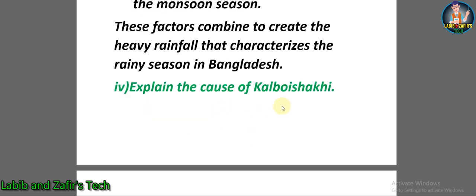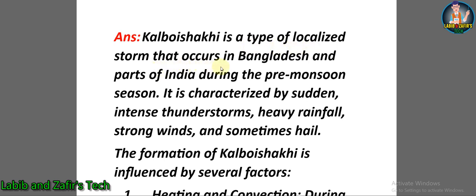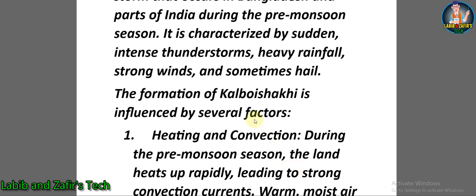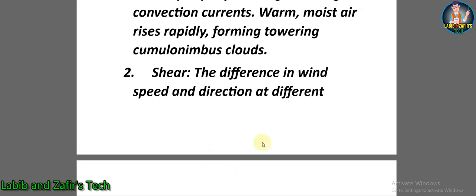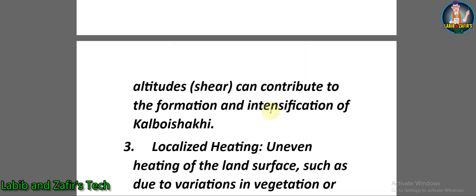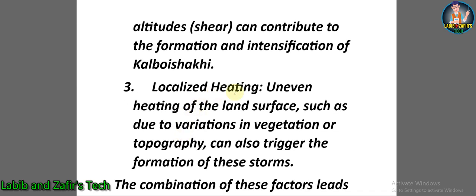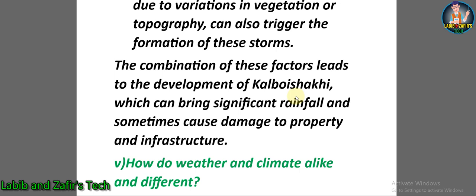Descriptive question number four: Explain the cause of Kalboishakhi. Answer: Kalboishakhi is a type of localized storm in Bangladesh and parts of India during the pre-monsoon season, characterized by sudden intense thunderstorms, heavy rainfall, strong winds, and sometimes hail. Its formation is influenced by: number one — heating and convection, where the land heats up rapidly leading to strong convection currents and towering cumulonimbus clouds; number two — wind shear, where differences in wind speed and direction at different altitudes intensify the storm; number three — localized heating from uneven land surface temperatures. These factors combine to create Kalboishakhi, which can cause significant damage to property and infrastructure.